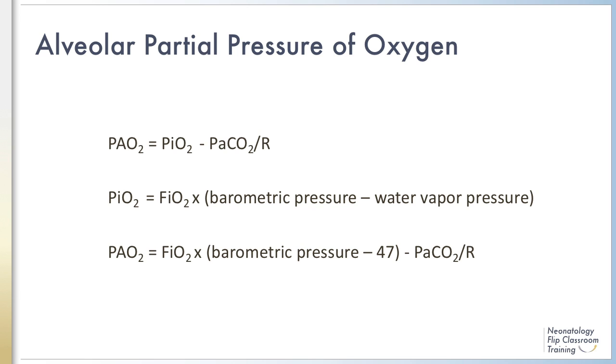So putting the equation together, PAO2 equals the FIO2 times the atmospheric pressure minus 47, minus the PaCO2, divided by R.